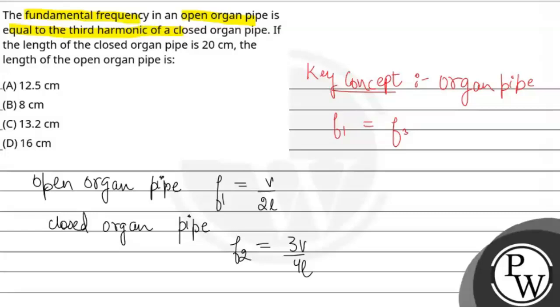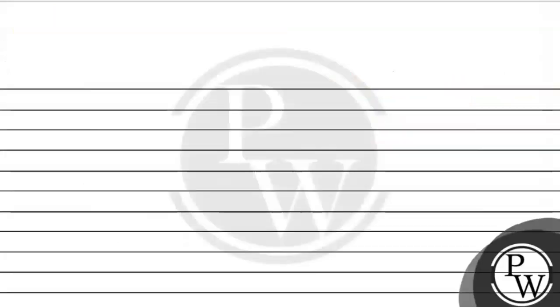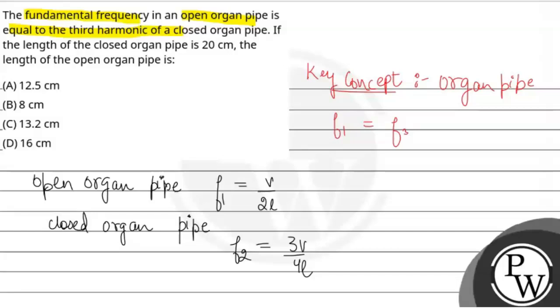Now it is given that both are equal, so F1 equals F2. But the lengths are different, so let this be L1 and this be L2. If length of closed organ pipe L2 equals 20 cm, then we have to find L1.